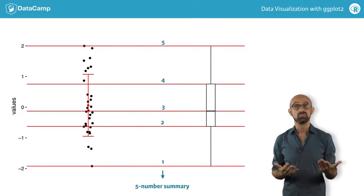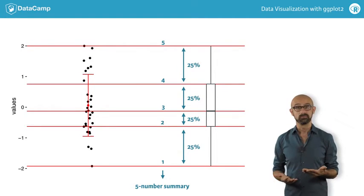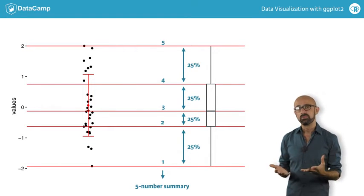We get an impression of the skew because each of the four segments—the two outer whiskers and the two parts of the inner box—reflect 25% of the data.